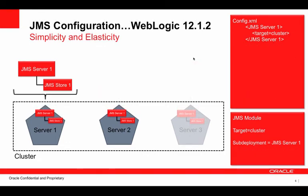In WebLogic 12.1.2, all of this gets much easier. You configure one JMS server and one WebLogic store and target it at the cluster. Then you configure a sub-deployment and point that at the one JMS server. The initial configuration is much simpler, as you can see on the screen. And JMS configuration for cluster scale-out is handled automatically. So as we add server 3, the JMS server and the JMS store are automatically added, and your distributed queues and topics are automatically spread across the new JMS server instances.